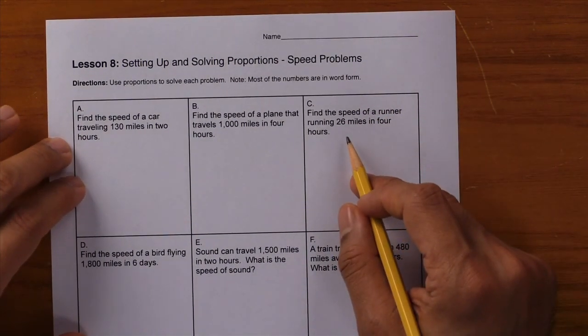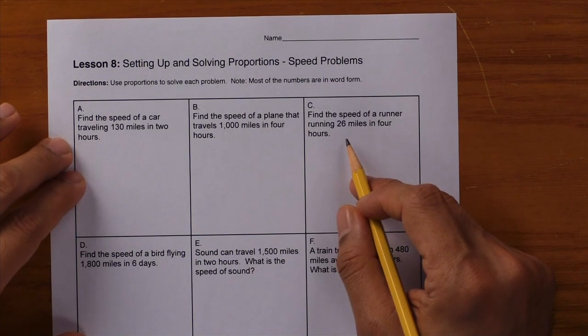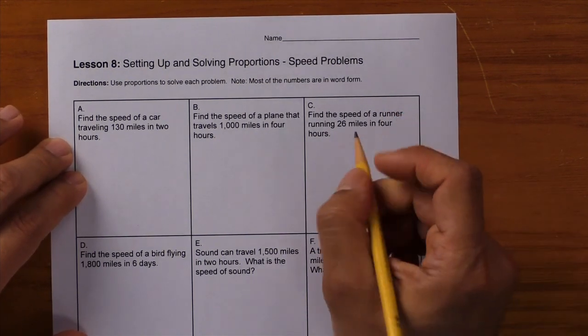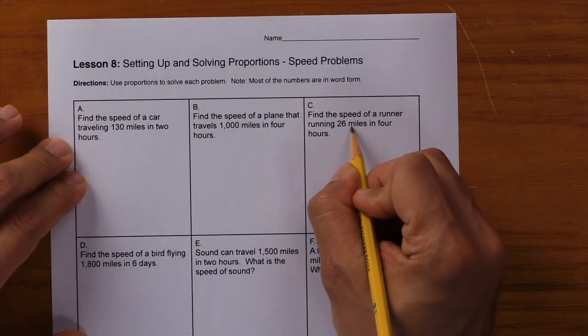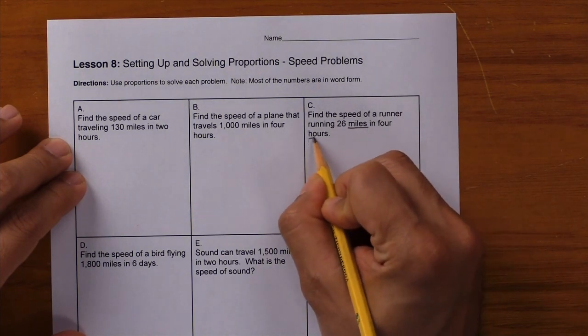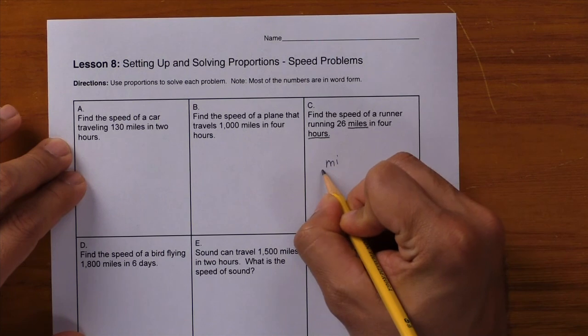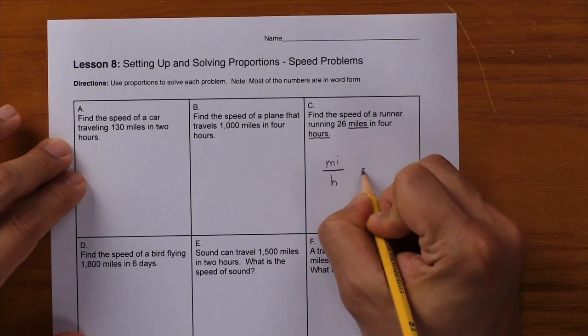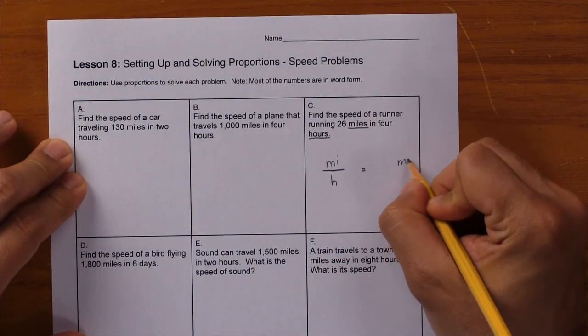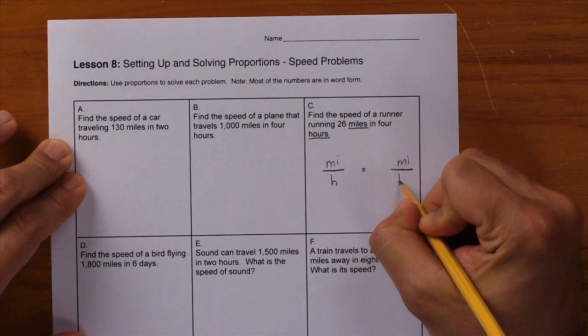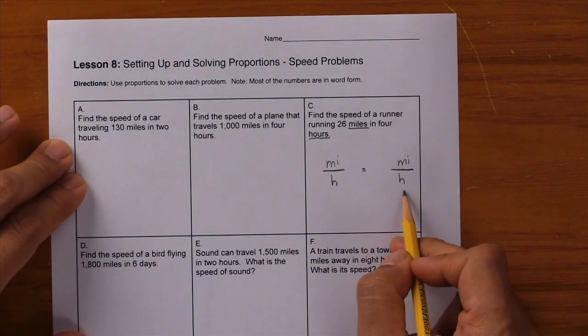It says find the speed of a runner running 26 miles in four hours. Let's set up a proportion. We don't have A's and B's; we have miles and hours. Write down miles per hour equals miles per hour. Now fill in the values where they belong.